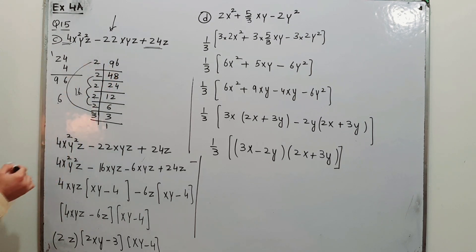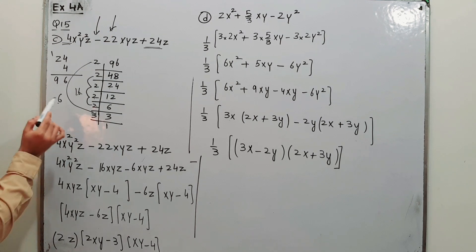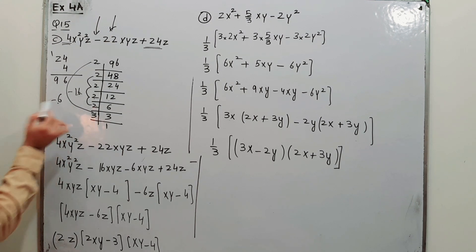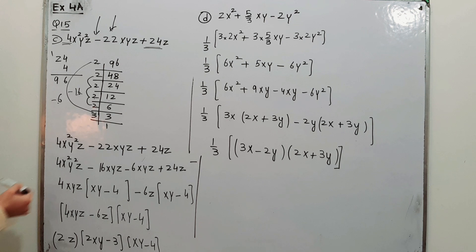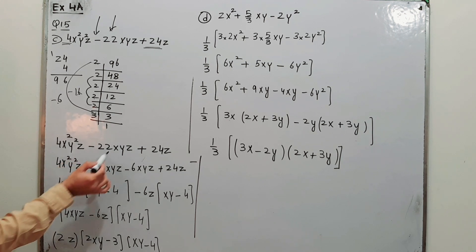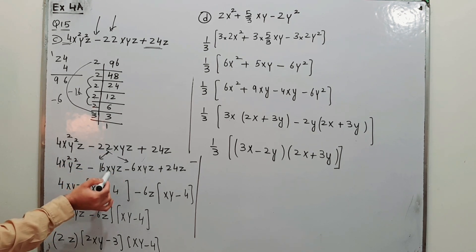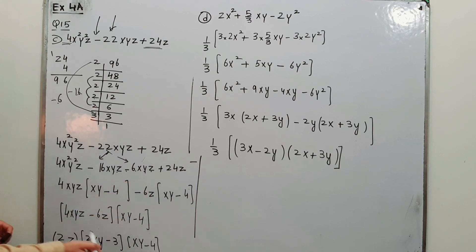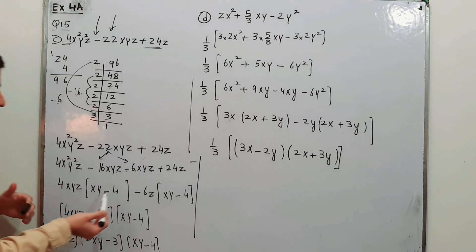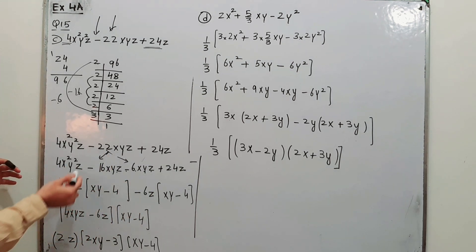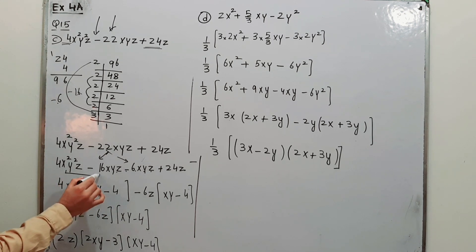16 and 6 are the pair of factors which upon addition give you 22 — since 16 plus 6 is 22. Because 22 is negative, we keep a negative sign with both 16 and 6 to get minus 22. So in place of 22 we use minus 16xyz minus 6xyz, and now the midterm is broken into two parts.